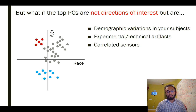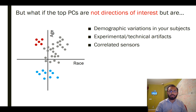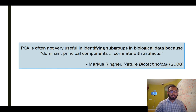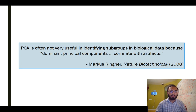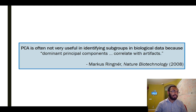In other cases, if you're collecting data from multiple sensors and there are correlated sensors, that again can cause PCA to reflect those correlated sensors rather than the signal you're interested in. Because of this, Marcus Ringner writes in a review in Nature Biotech that PCA is oftentimes not very useful in identifying subgroups in biological data, because dominant principal components correlate with artifacts instead of the signal of interest.